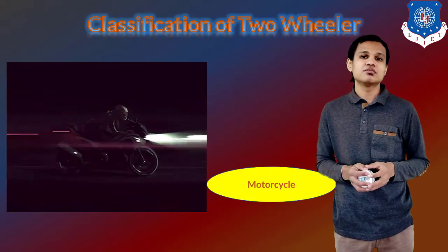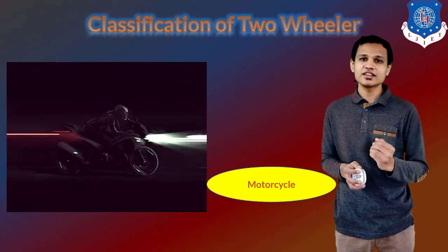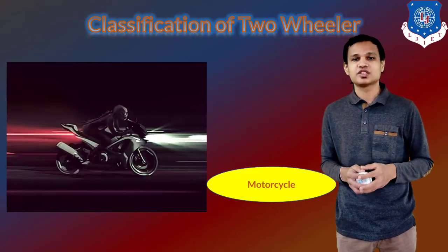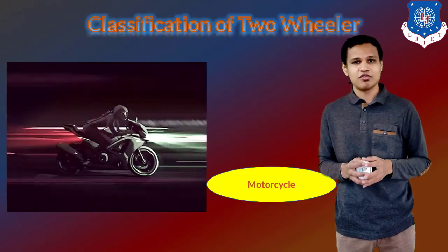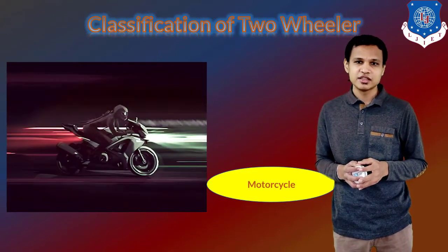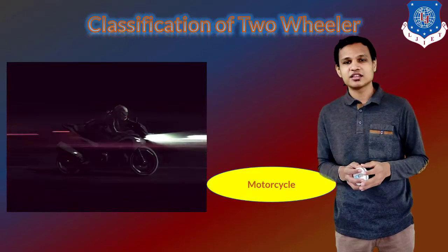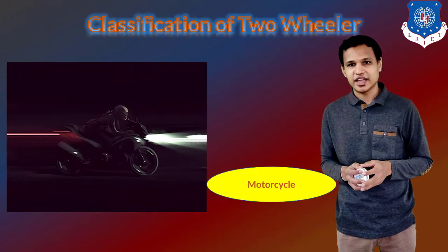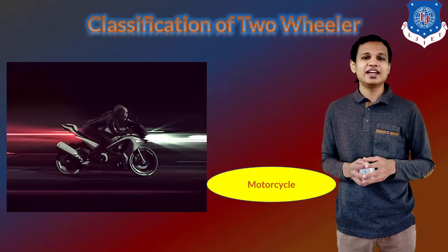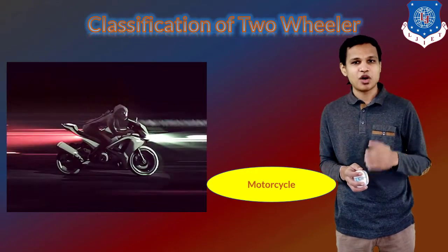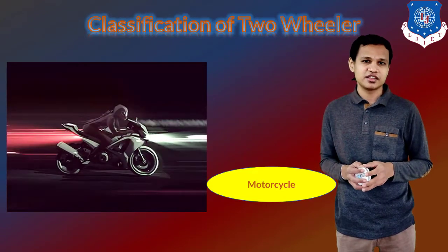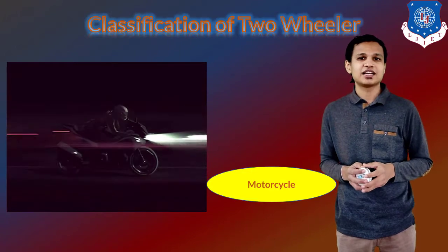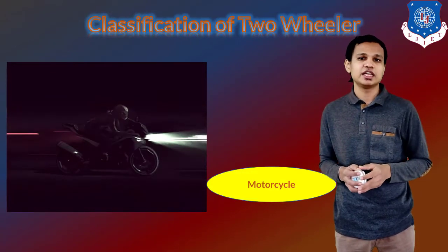The last thing is the motorcycle. Motorcycles are very broadly classified and there are different types used. Generally, motorcycles are provided with manual transmissions, and these are the reason for better fuel average compared to scooters. Motorcycles are widely used and are a very popular two-wheeler. So these are the four simple classifications for the two-wheelers.